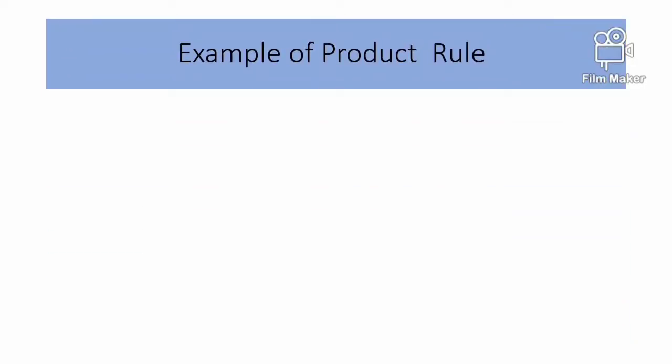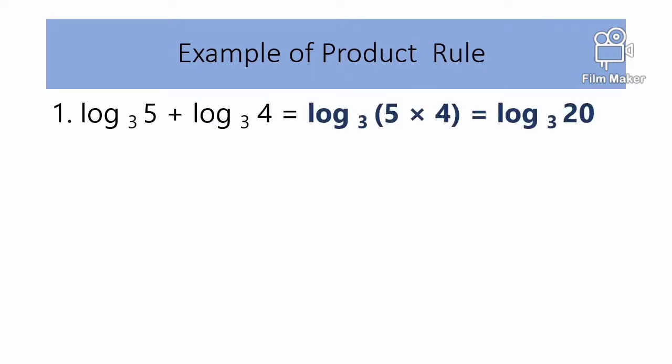Example of Product Rule. Number 1: Logarithm base 3 of 5 plus logarithm base 3 of 4 equals logarithm base 3 of 5 times 4, and then logarithm base 3 of 20.